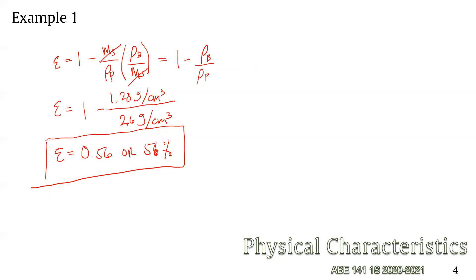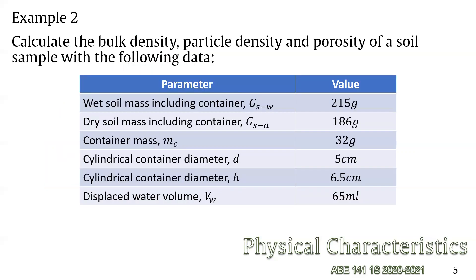We now go to another example. This time we have soil as the material. Soil is an agricultural material which is very important in plant nutrition, and we have a table of given values.